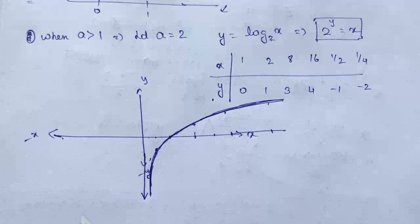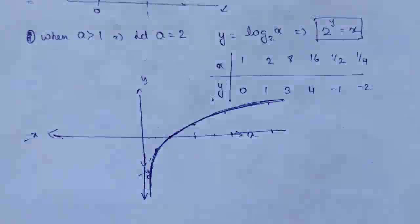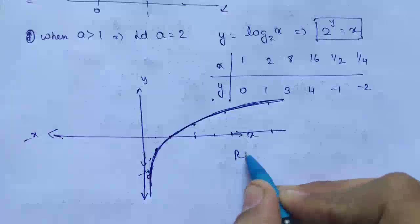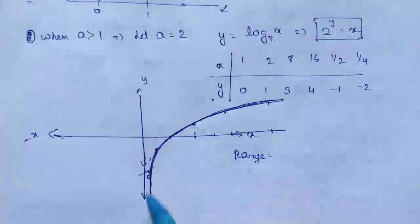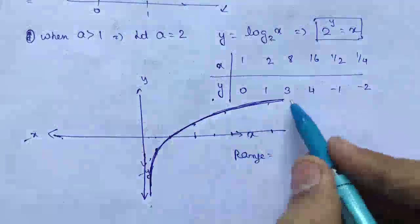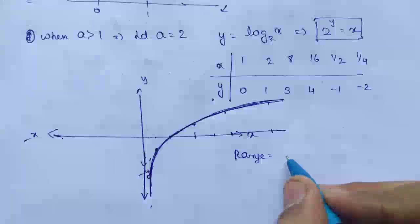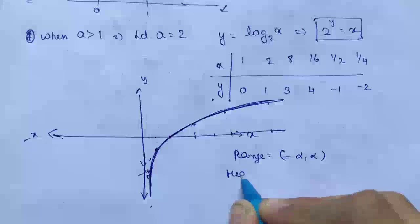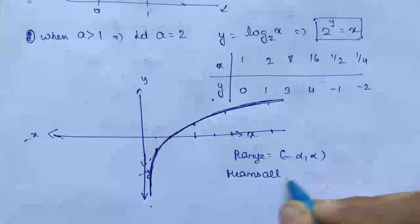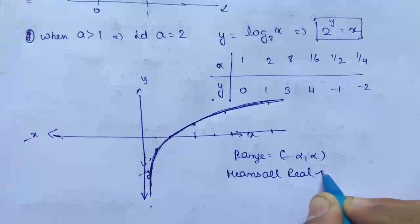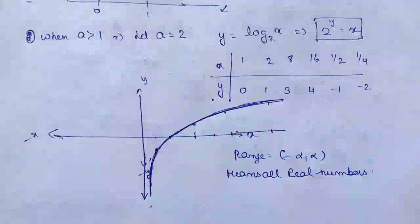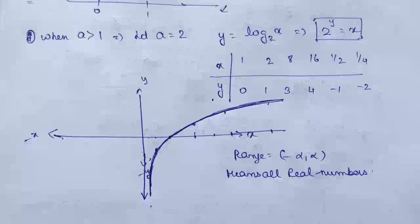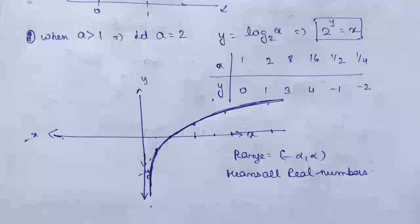We had assumed a = 2. So if we look at this: domain we know is (0, ∞), but if we talk about the range — y values go from negative infinity to positive infinity. That means range is from negative infinity to positive infinity — all real numbers.